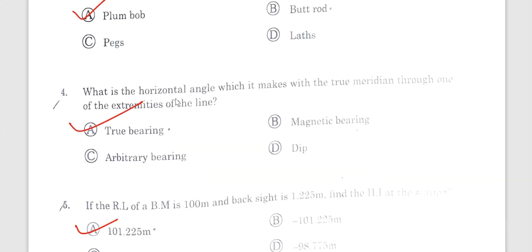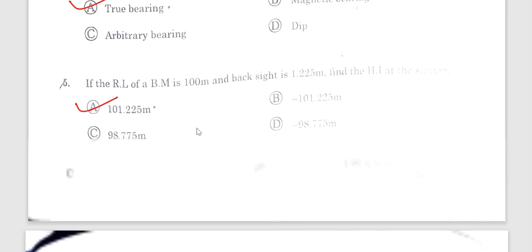Question number 4. What is the horizontal angle which it makes with the meridian through one through the extremities of the line? The horizontal angle which it makes with the magnetic meridian is the magnetic bearing. Option A is correct.